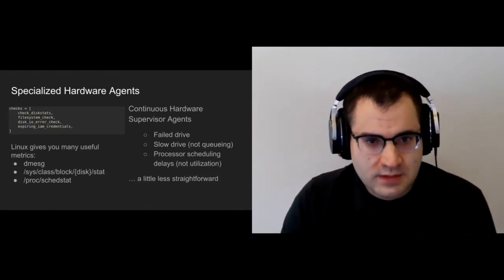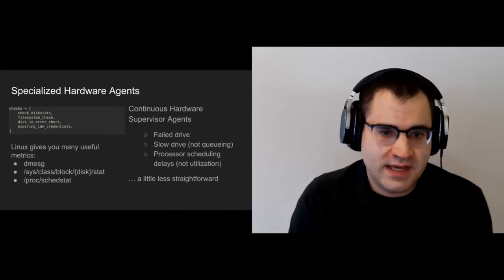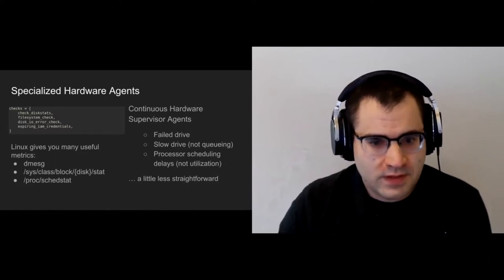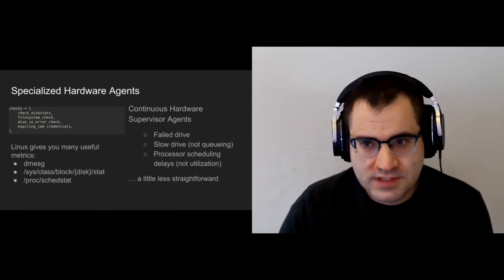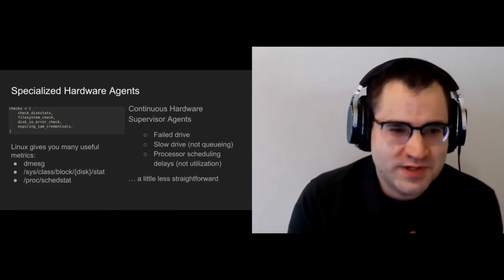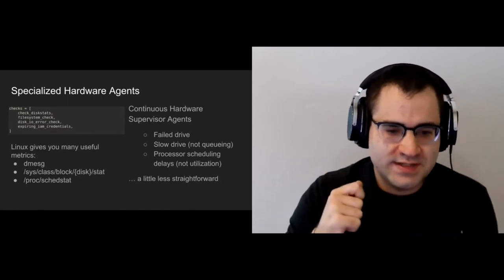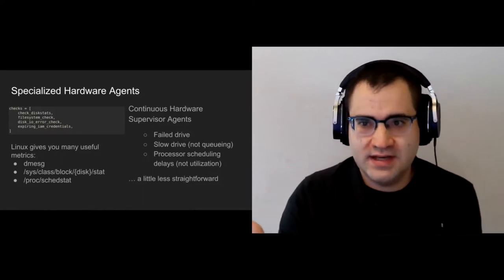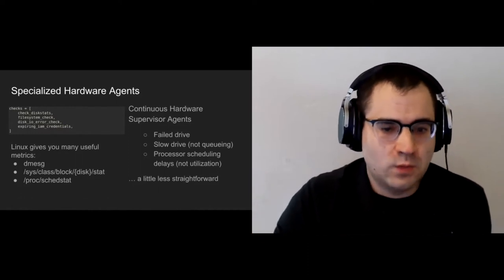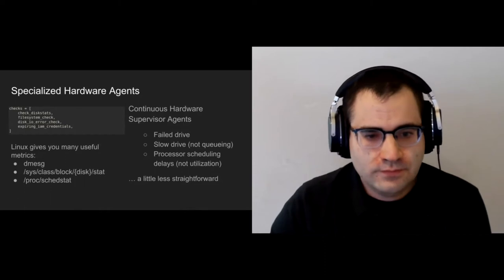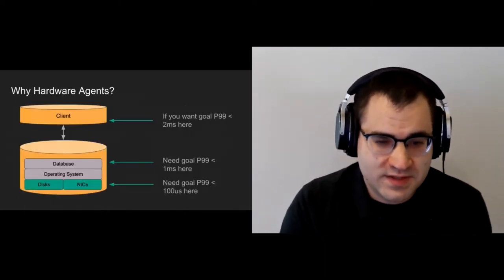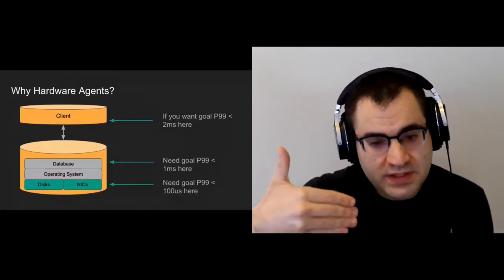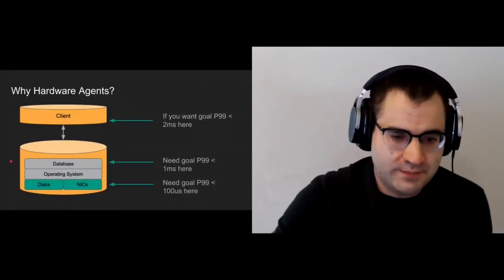We want hardware agents because we have to assess our goals at the lowest level in order to meet the highest level. For example, if we want a 2-millisecond 99th percentile guarantee at the client, we need a 1-millisecond 99th percentile guarantee at the database, and in order to achieve that at the database, we need a 100-microsecond goal to be met at our disk or network level. Building up a goal-based system really starts with the lowest level and then we build up.